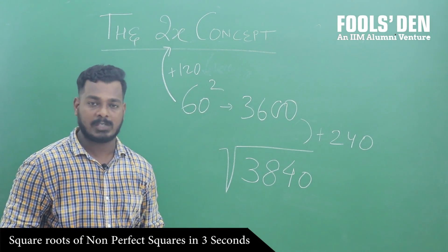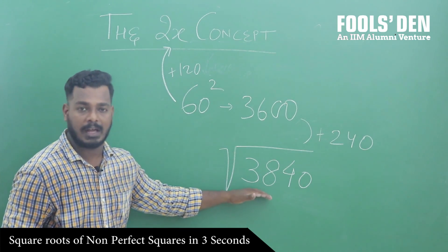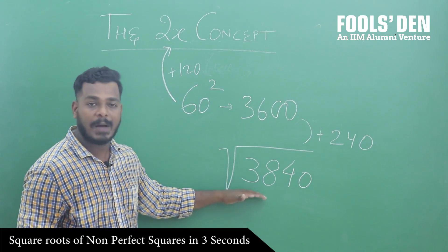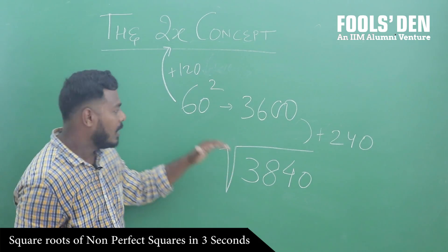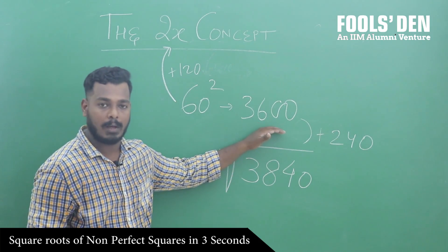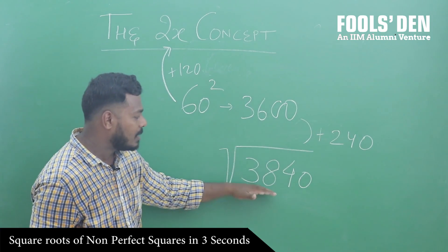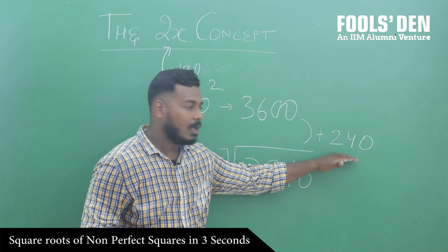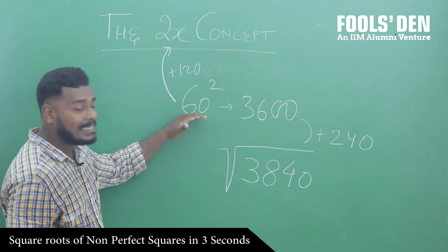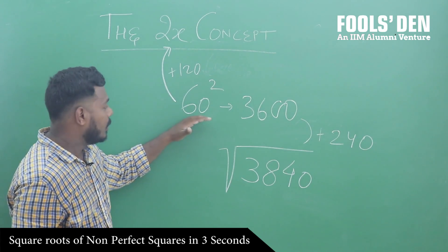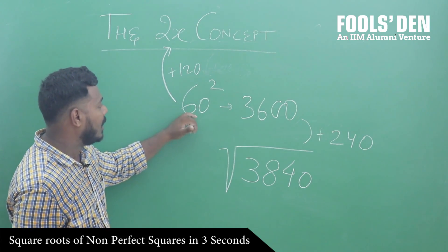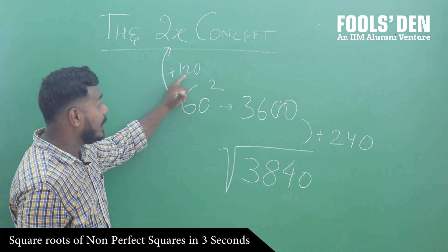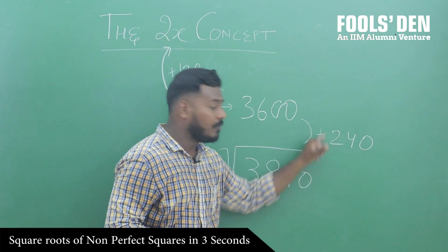तो अभी हमने जो concept सीखा है, the 2x concept, उसको use करके हम इस number का square root निकालेंगे. Square root of 3840, which is not a perfect square, कैसे निकालते हैं देखते हैं. 3840 के पास आपको कौन सा perfect square याद है? 60 का square 3600 सबको याद होगा. इन दोनों में difference अगर आप देखेंगे, तो 240 का difference आएगा.